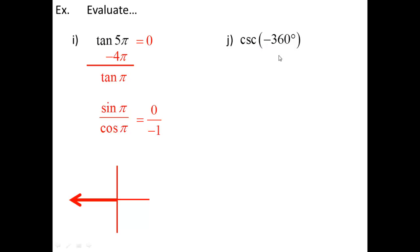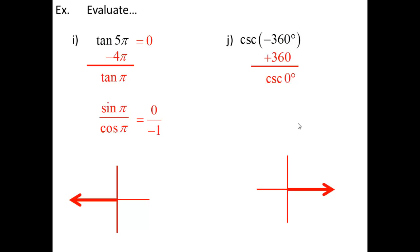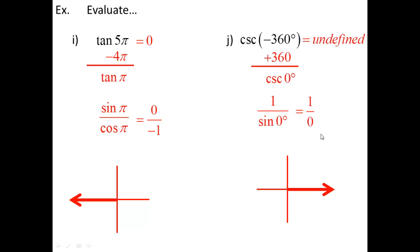Cosecant of −360°: add 360° to get 0°. The coordinate at 0° is (1, 0). Cosecant is 1 over sine, and sine of 0° is 0. So we get 1/0, which is undefined. Anytime you end up with 0 in the denominator, the answer is undefined. So cosecant of −360° is undefined.